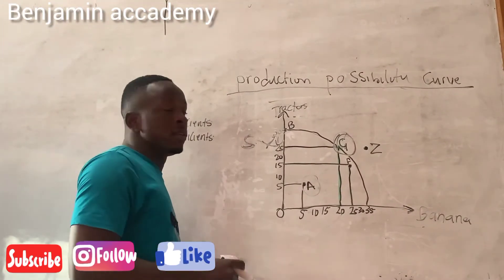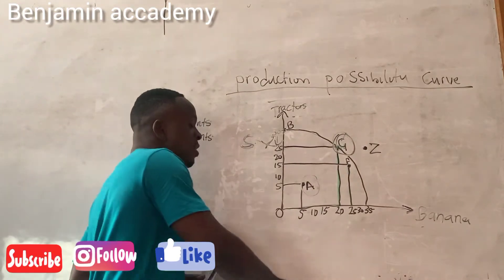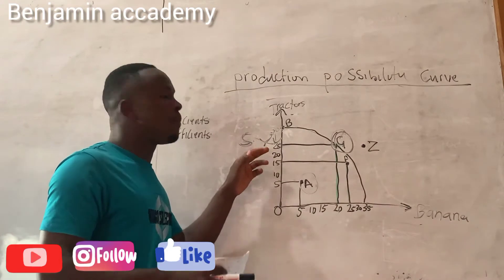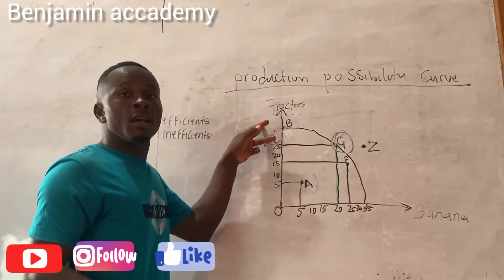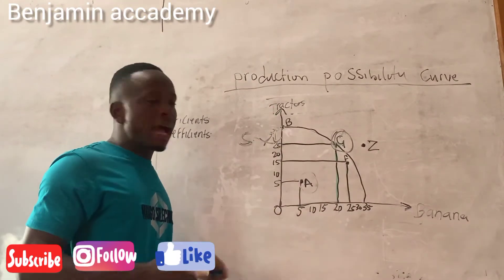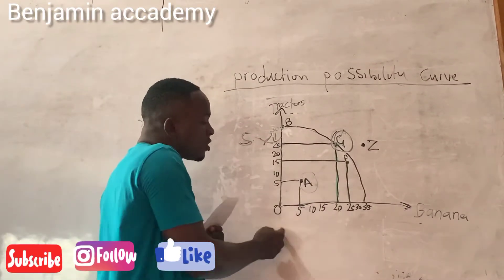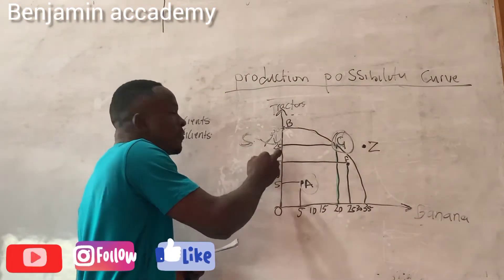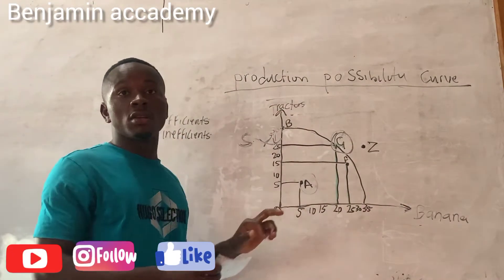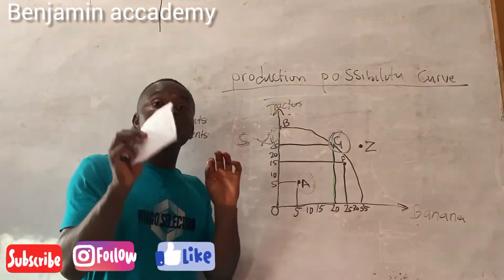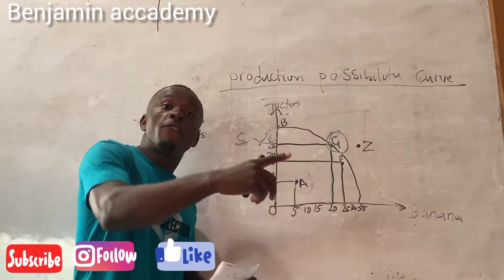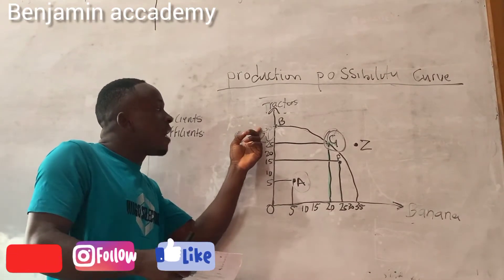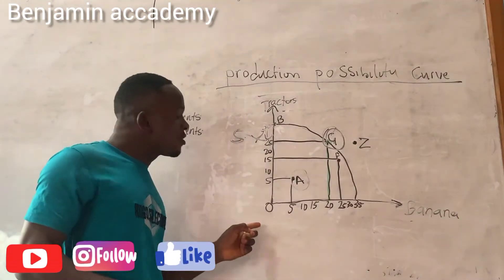And if they asked the question the other way around and said what would be the opportunity cost of moving from point G to point B for producing tractors, then the country has to forgo 20 units of banana to increase from 25 to 30 units of tractor. Opportunity cost explains the next best forgone alternative — the country has to forgo one thing in order to produce another.